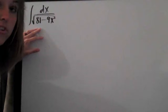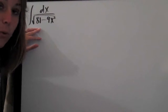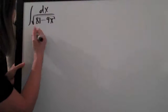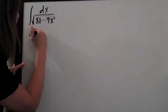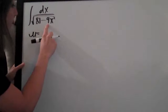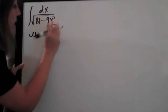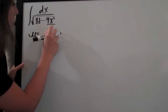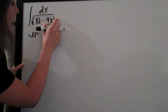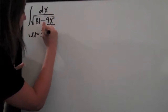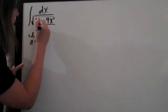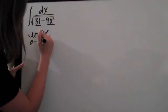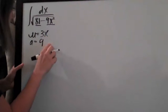As with any trigonometric substitution problem, we have quite a bit of legwork to do before we actually get started. The first thing we need to do is identify u and a. u represents the variable part of whatever is inside our square root, so it's going to be the square root of 9x squared, which is 3x. And a represents the square root of the constant, so that's going to be 9.